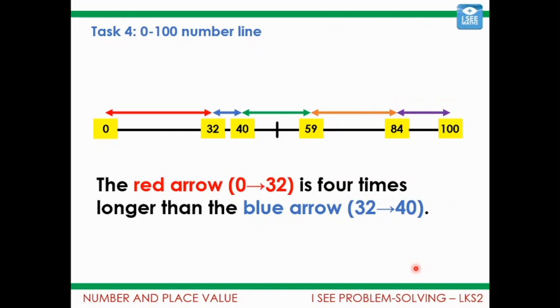Equally the red arrow is actually four times longer than that blue arrow so 0 to 32 compared to this gap of 8 here. So that's another thing that could be checked.